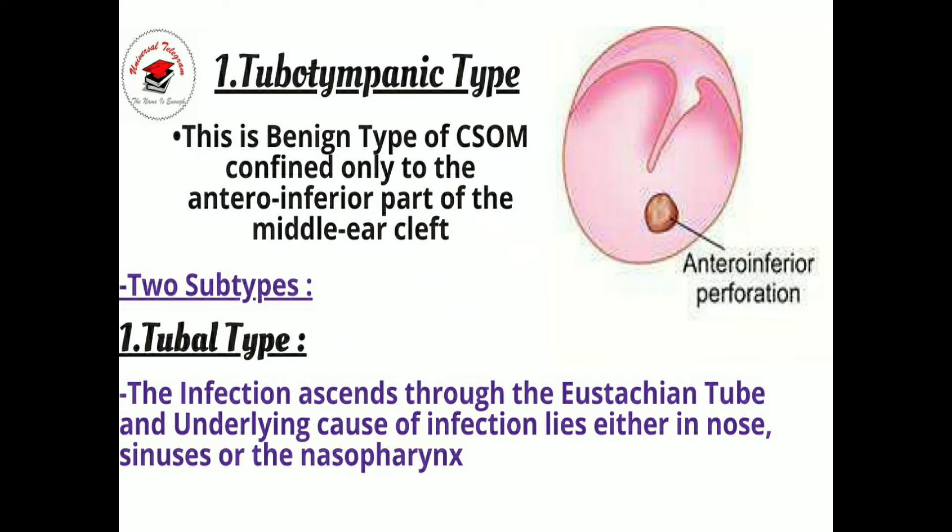The tubotympanic type is a safe, benign type of Chronic Suppurative Otitis Media confined only to the anterior inferior part of the middle ear cleft. As you can see in the picture, there is an antero-inferior perforation.